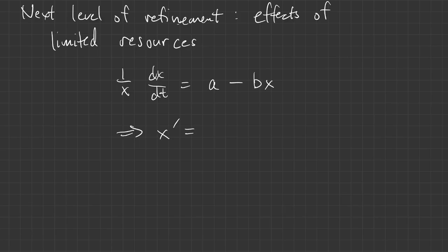When we rewrite that, we get x prime equals ax minus bx squared, where a and b are constants. And this is known as the logistic equation.